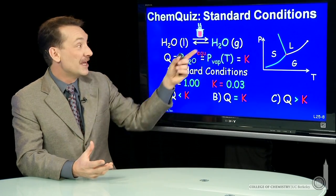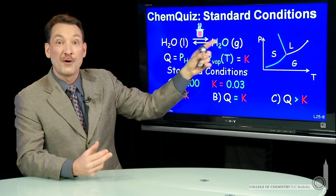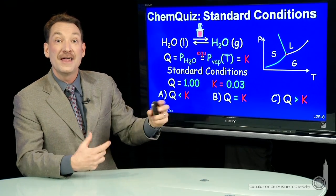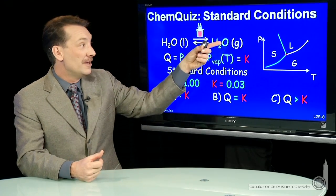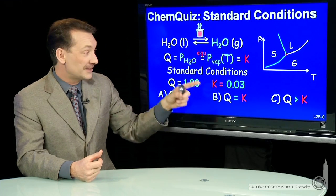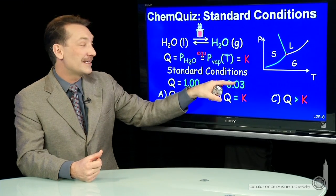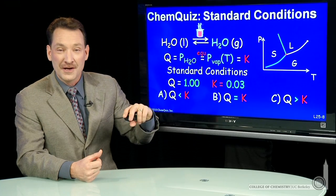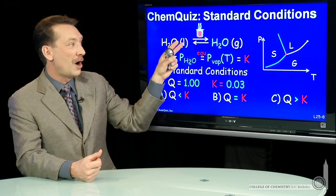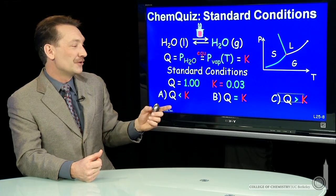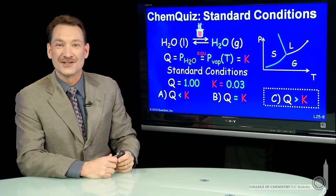And I think you'd predict that's what's happened. If you had a whole atmosphere of pressure of water at 25 degrees C, that's too high a pressure. The water will condense until the pressure becomes 0.03, the accepted known equilibrium vapor pressure for water at 25 degrees C. So the answer here, Q, is larger than K.